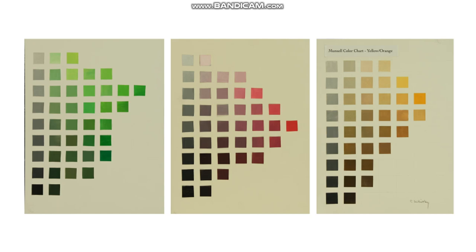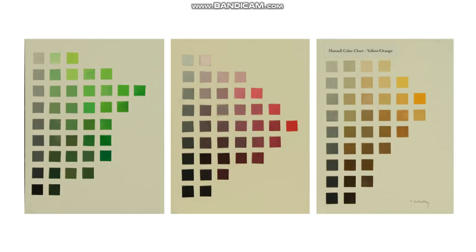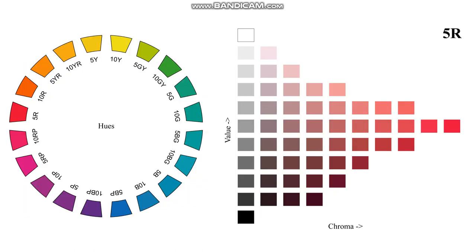This image I showed at the end of the last lecture is part of the project we're going to be doing for Unit 2. I'm going to talk about what this means, how you make it, and what you learn from it. The first thing we have to understand is the Munsell color wheel.